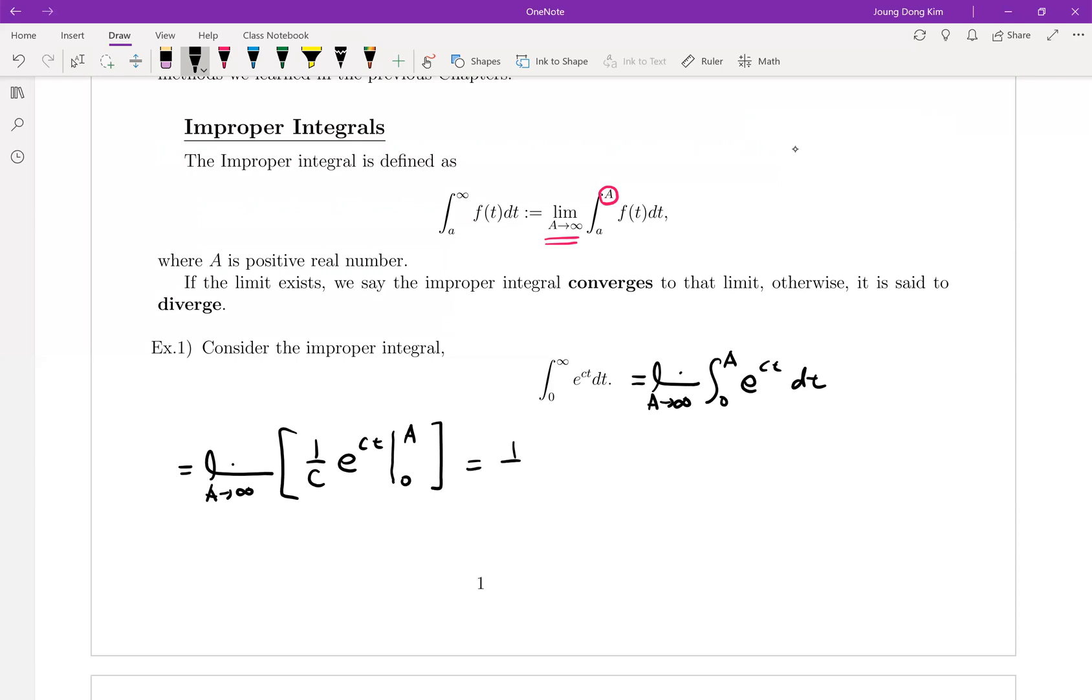Let me write the coefficient first because your limit is working for a and the coefficient can be written in front of limit. Plug in a first which is e to the ac minus e to zero which is one. Is that okay so far? So here there are two cases. It is really case dependent.